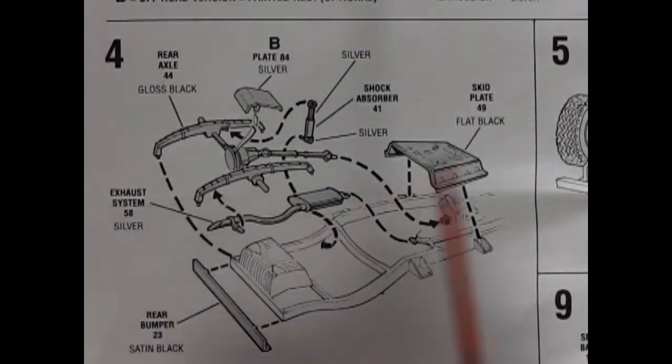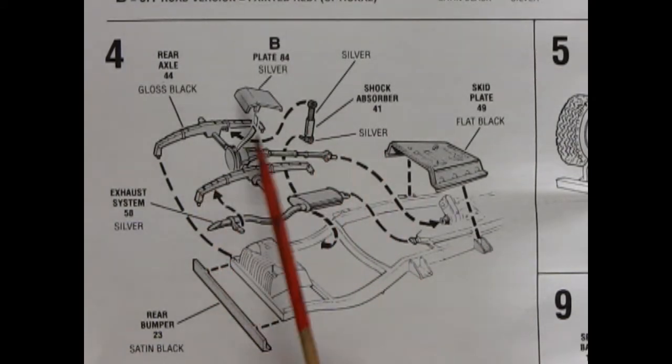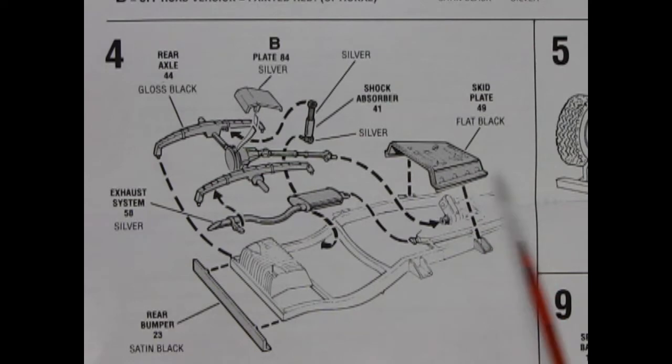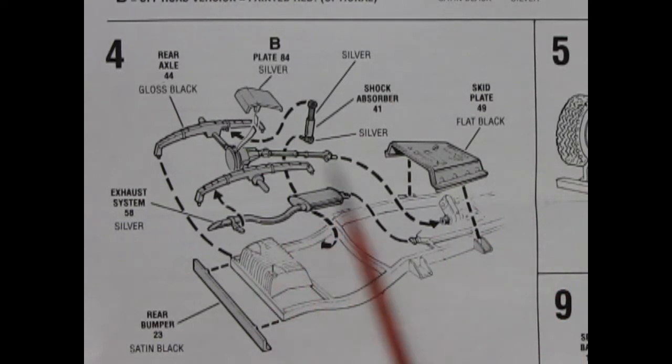Panel 4 shows the assembly in the back end of our Jeep with our rear axle, the plate, shock absorbers, a skid plate in the center of the frame as well as our bumper and our rear exhaust.